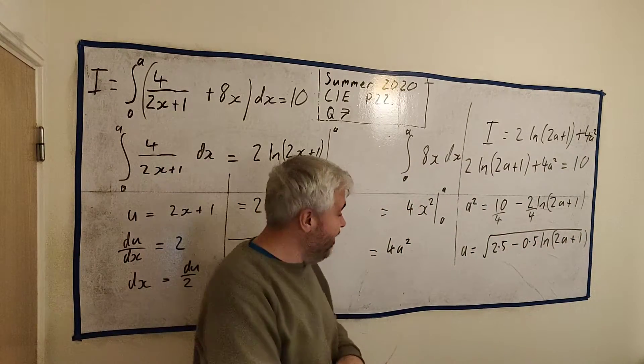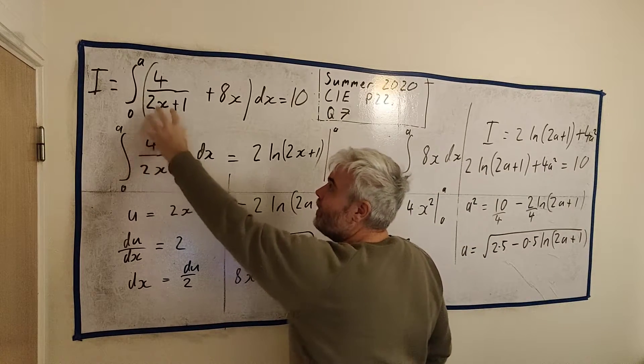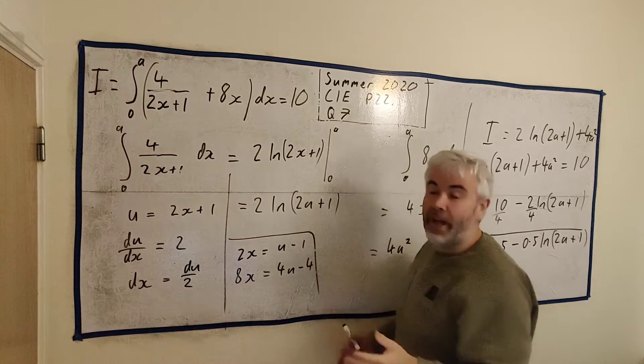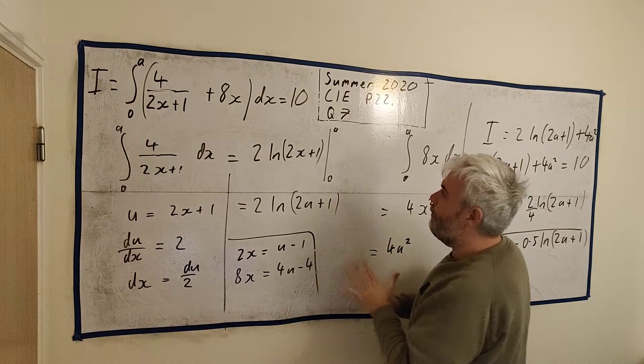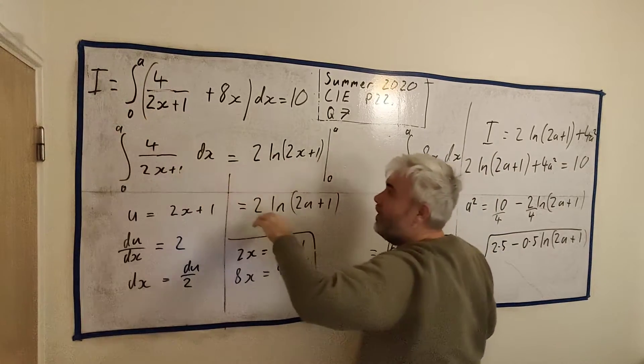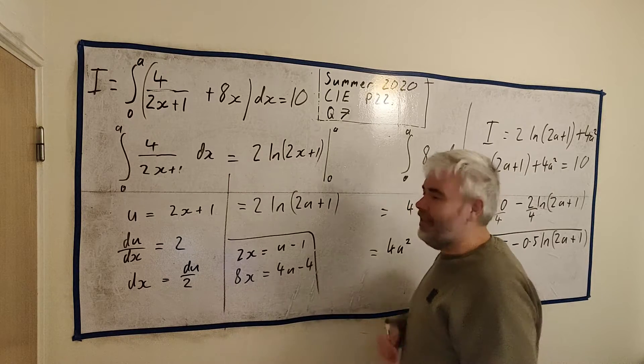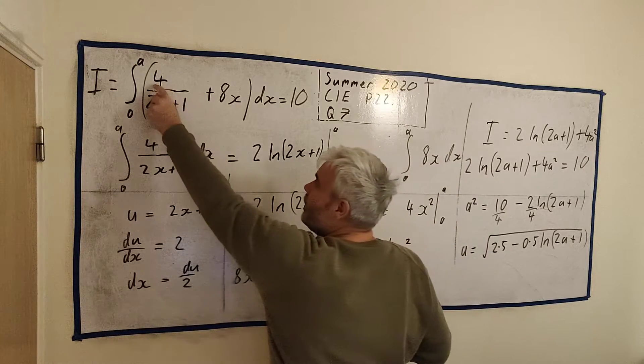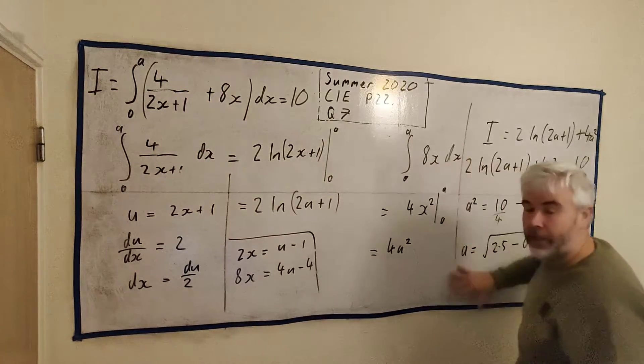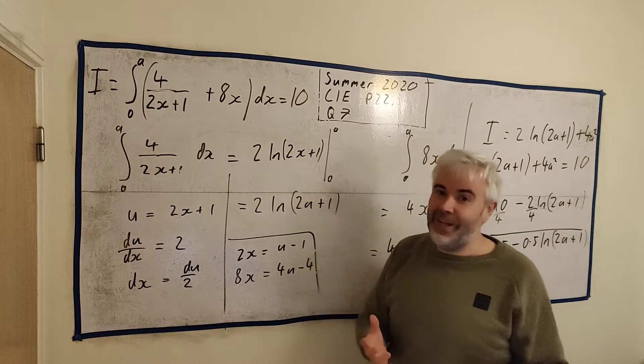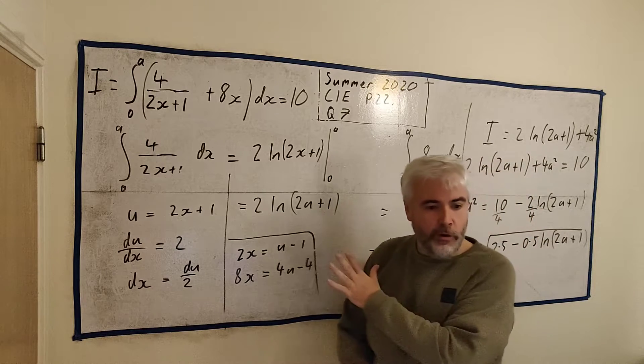So let's rearrange this and we get a squared on its own. So a squared will be equal to 10 minus 2 natural log of 2a plus 1. I'm going to divide them all by 4. 10 divided by 4 is what we wanted, 2.5. And we'll divide this one by 4, which is 0.5. So we're on track here. The square root of all of it is, we get a is equal to the square root of 2.5 minus 0.5 natural log of 2a plus 1. And that's it. That's the answer there.